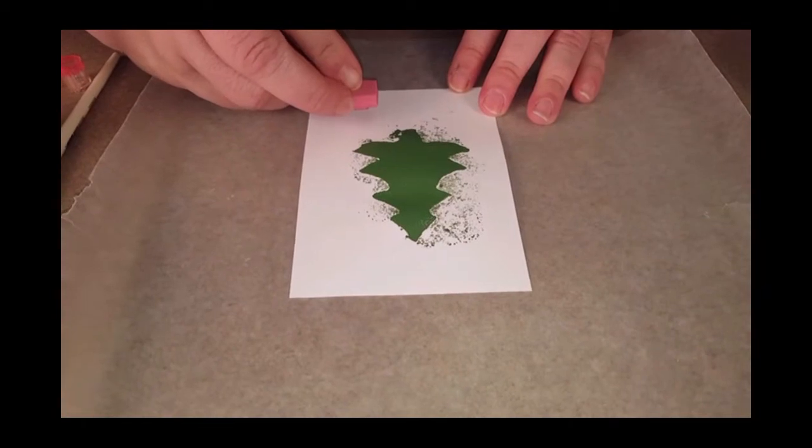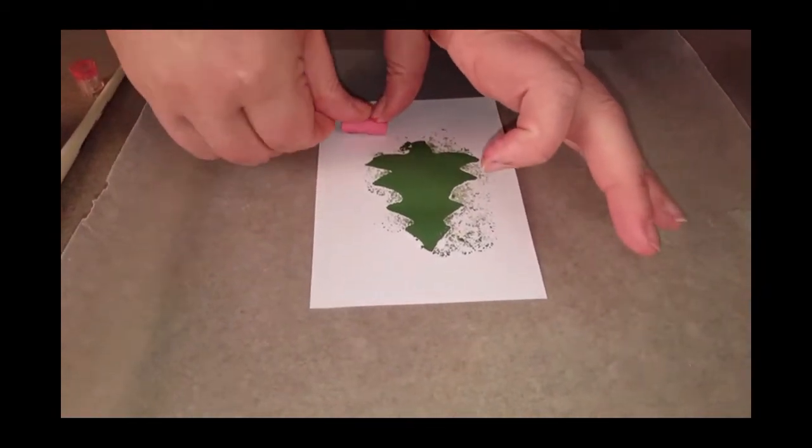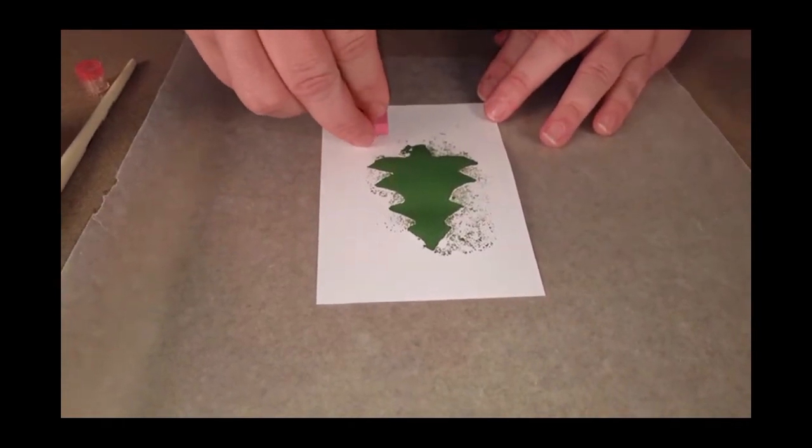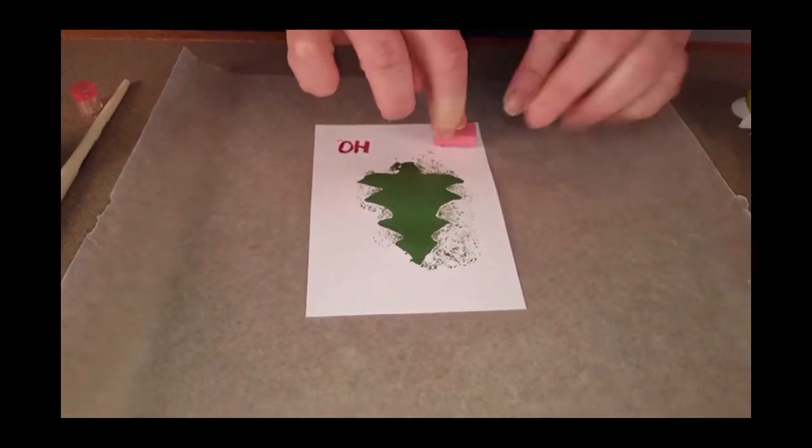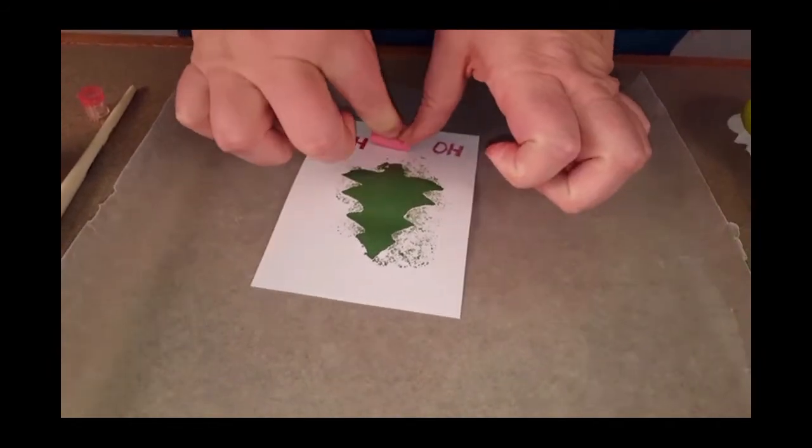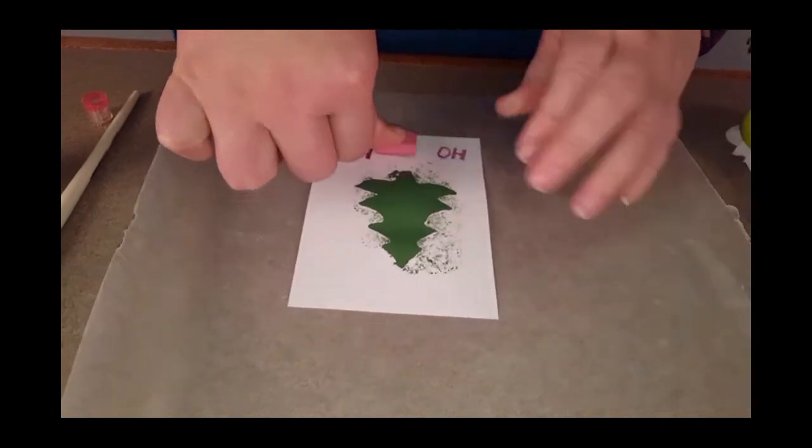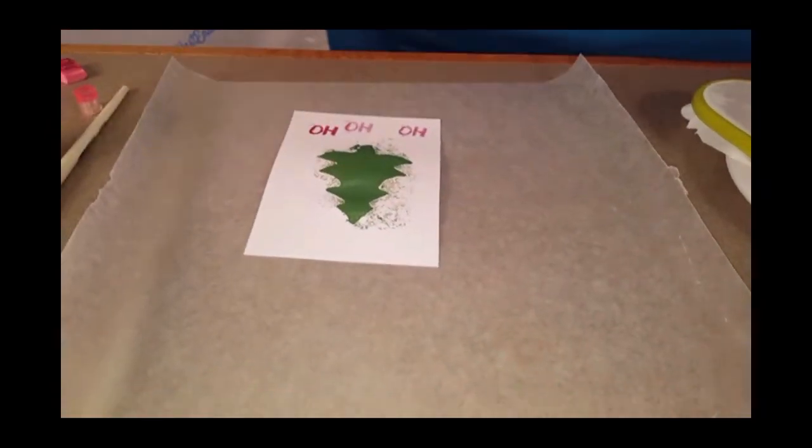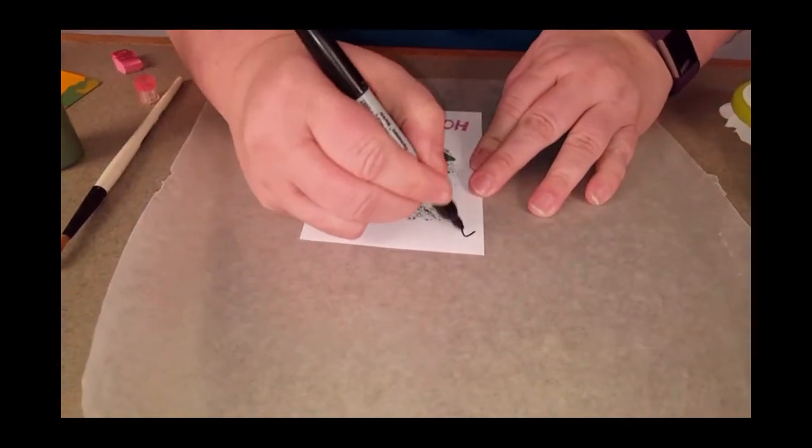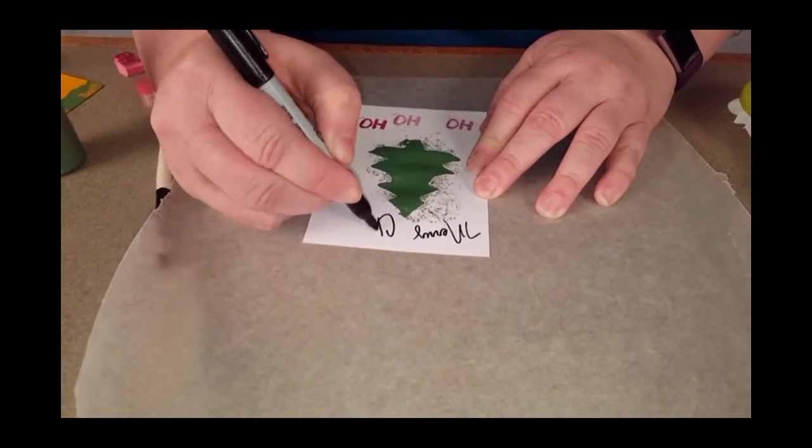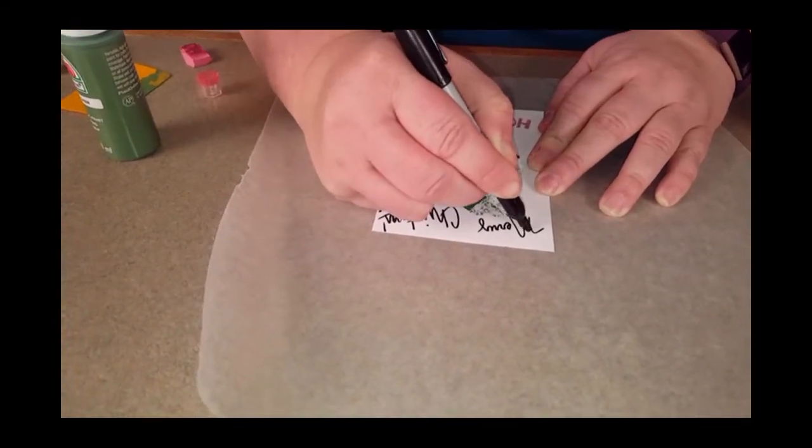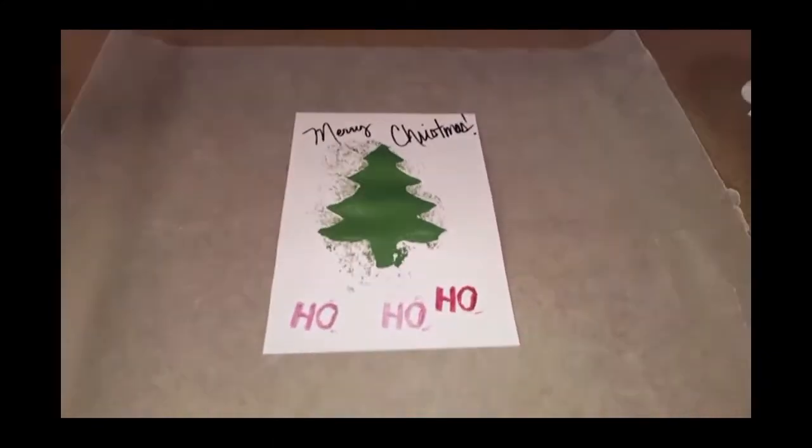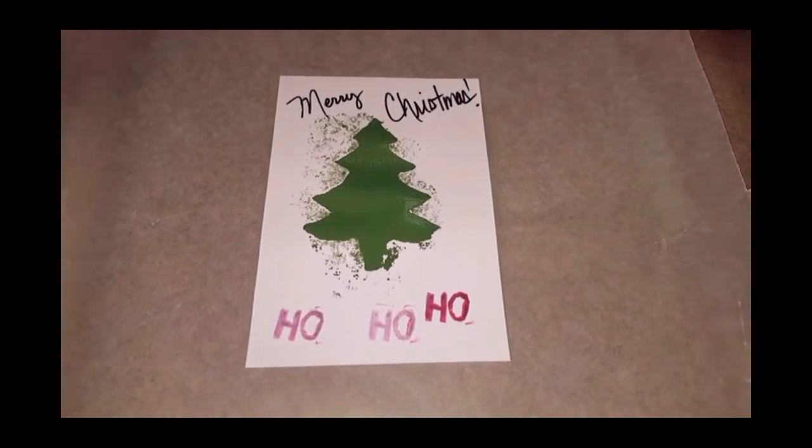This is our star stamp made from an eraser. I took it and put some red ink on there, lift up with our eraser stamp, and then you can re-ink up if you want and add a little bit more to it. Then you have your own personalized Christmas card.